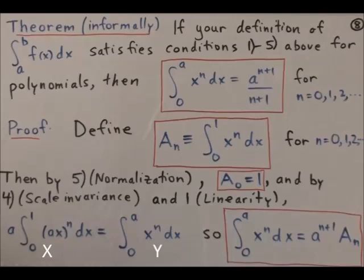To prove that the integral from 0 to A of x to the n dx equals A to the n plus 1 over n plus 1, where n is a non-negative integer, first define A sub n as the integral from 0 to 1 of x to the n dx. By the normalization property, A sub 0 equals 1. By the scale invariance property, integral x is equivalent to integral y.